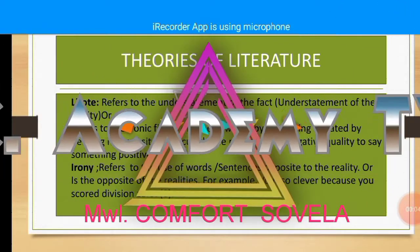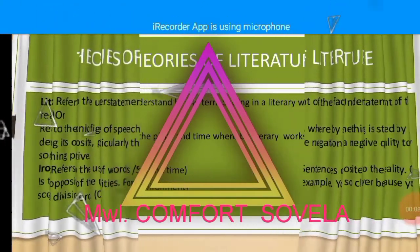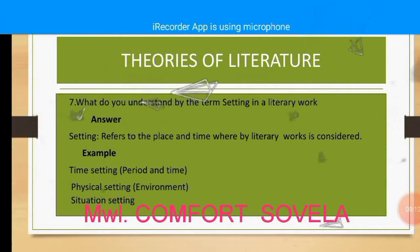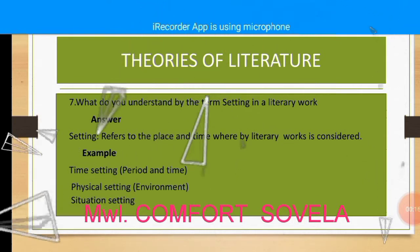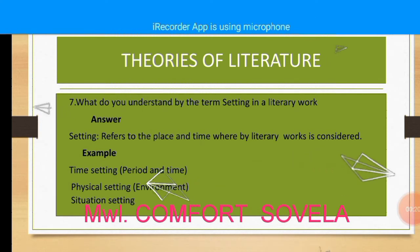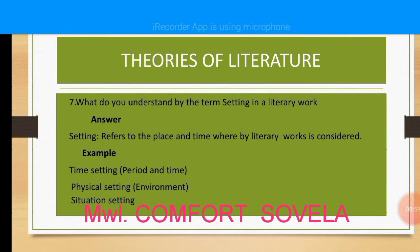We are going to discuss about settings, characterization, title, and so forth, by starting with settings. The question that can be asked is: what do you understand by the term 'settings' in a literary work? Setting refers to the place and time whereby a literary work is considered, for instance time setting or period, and physical setting or environment situation setting.